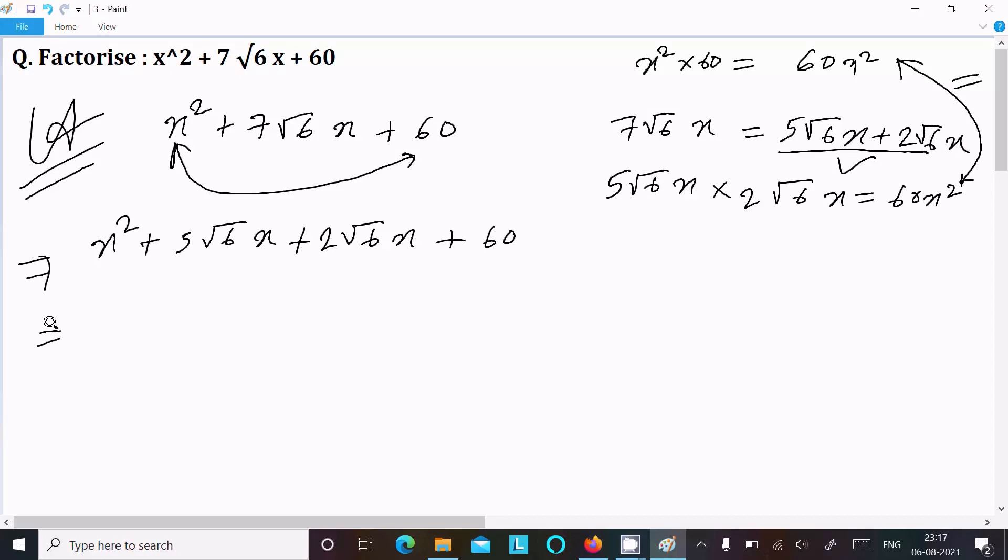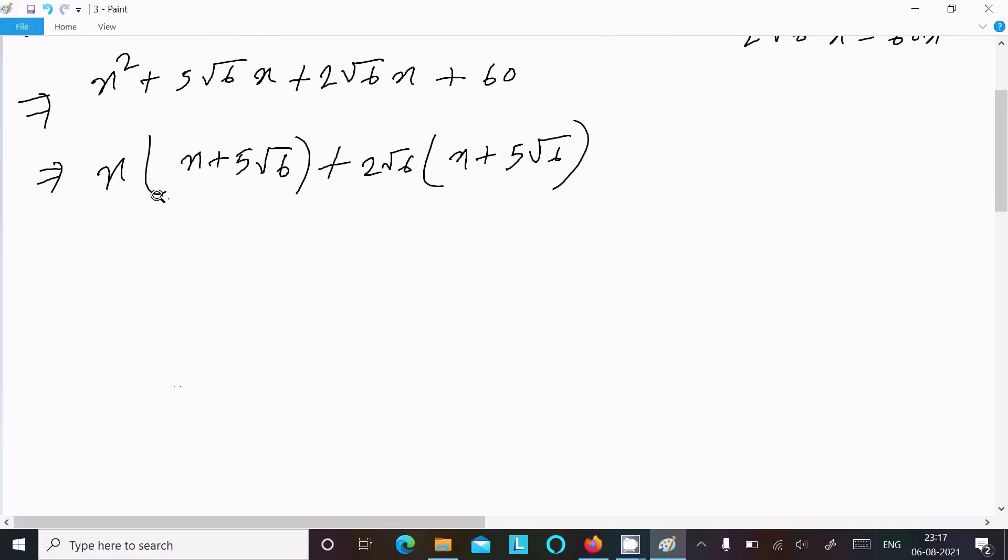That becomes x(x + 5√6). Here taking the common 2√6, so it becomes 2√6(x + 5√6). Now 5√6, take the common: (x + 5√6).